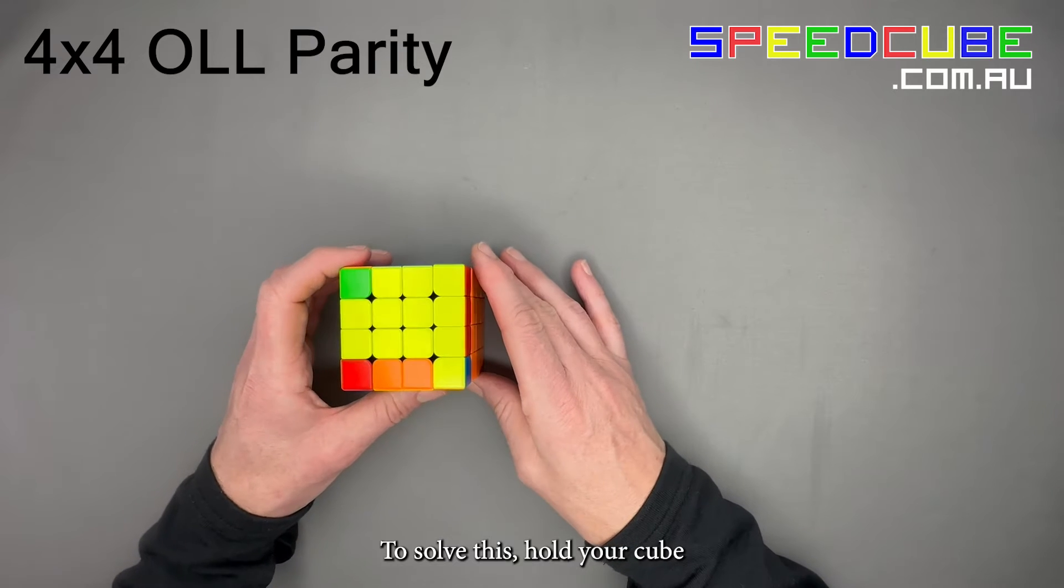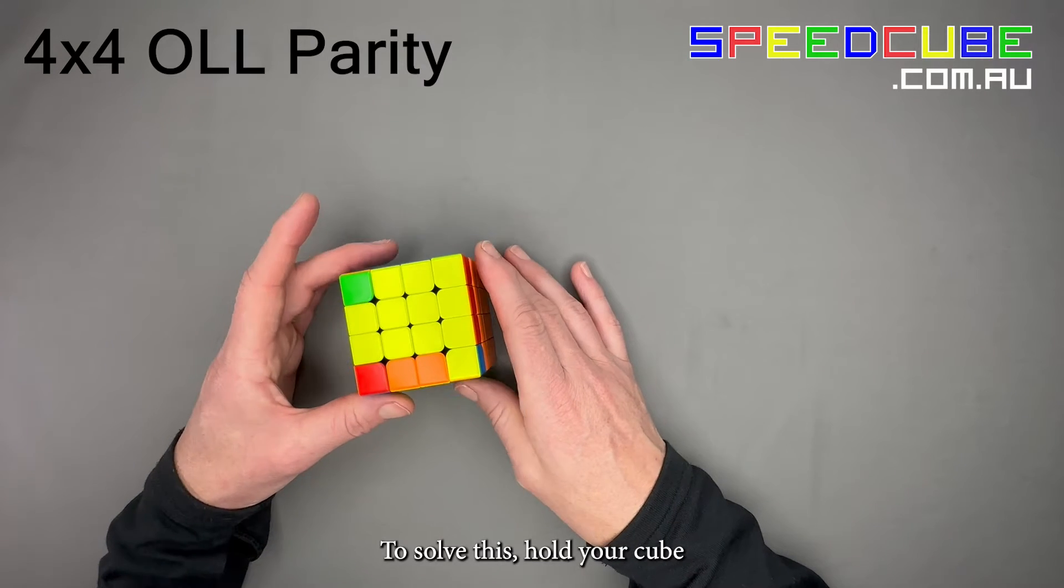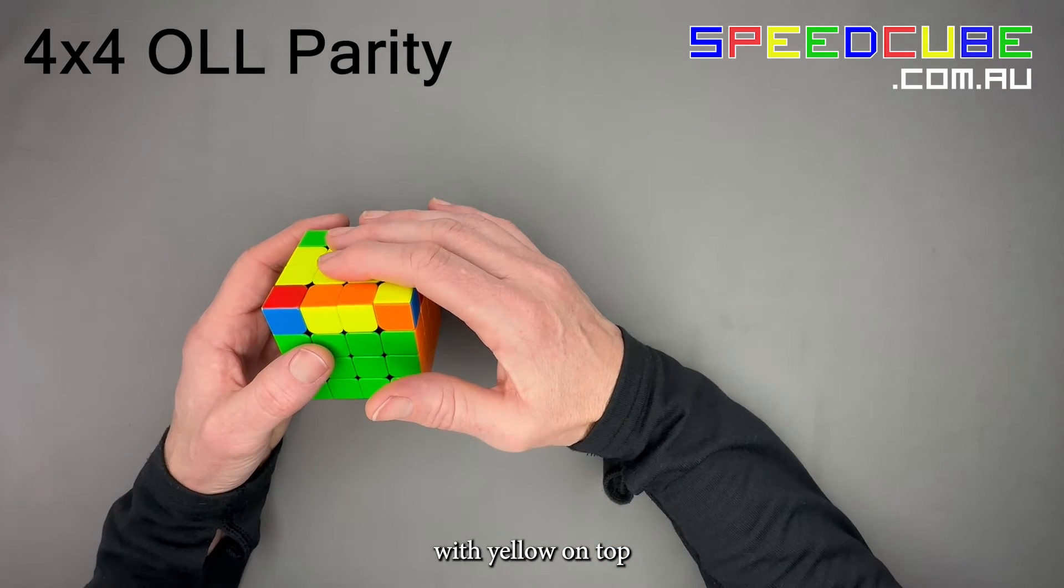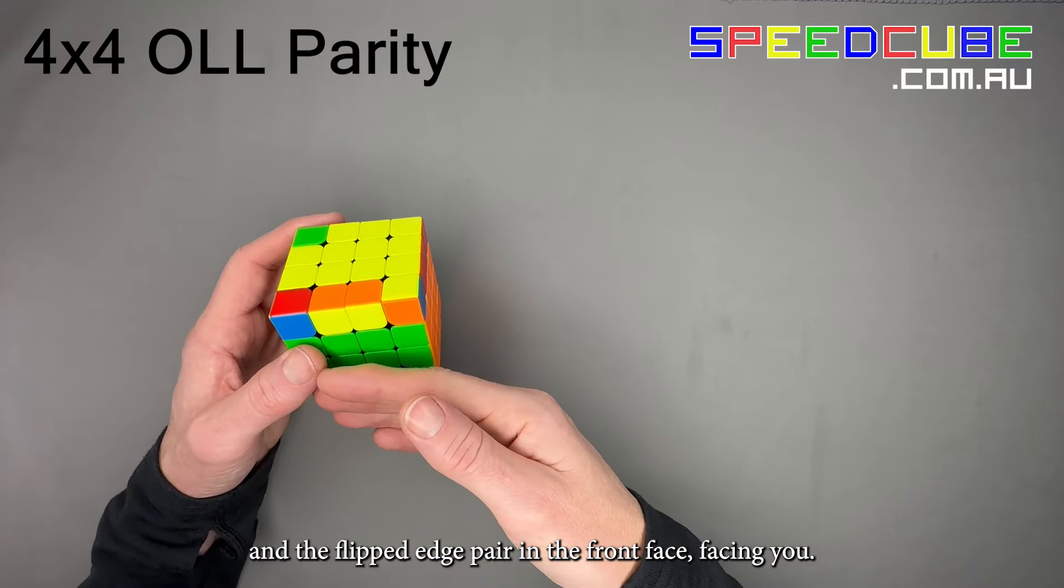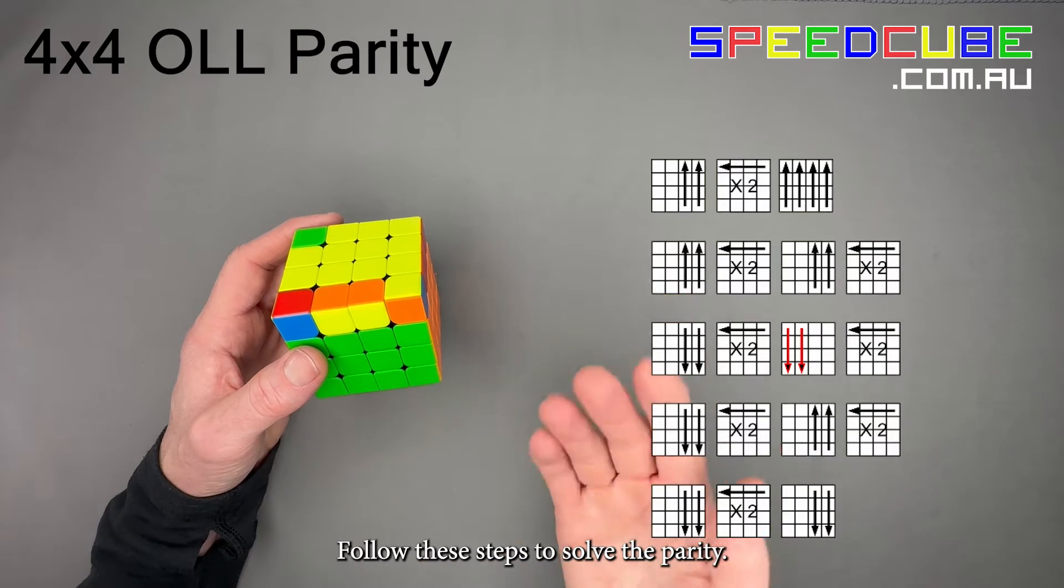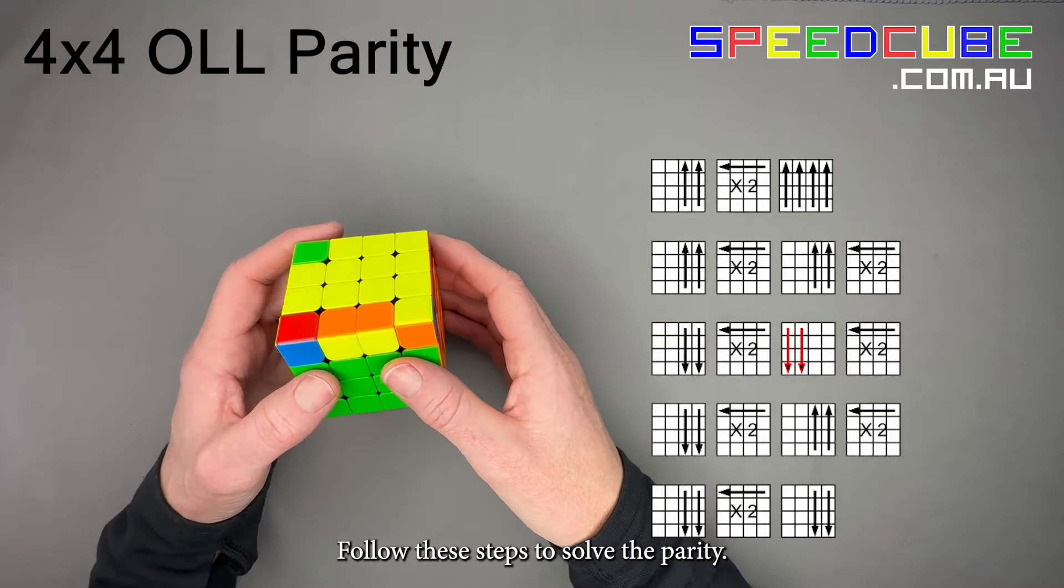To solve this, hold your cube with yellow on top and the flipped edge pair in the front face facing you. Follow these steps to solve the parity.